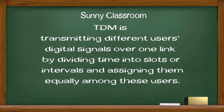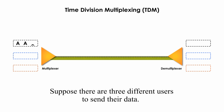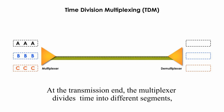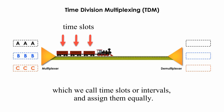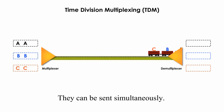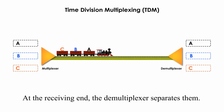TDM is transmitting different users' digital signals over one link or one media by dividing time into slots or intervals, and assigning them equally among these different users. Let's look at one example. Suppose there are three different users sending their data. At the transmission end, the multiplexer divides time into different segments — time slots or intervals — and assigns them equally. At the receiving end, the demultiplexer separates them.